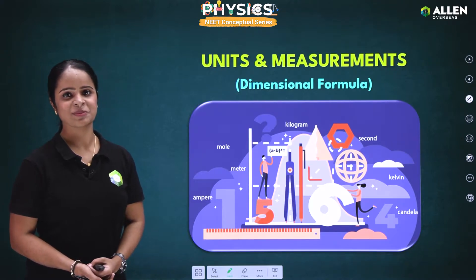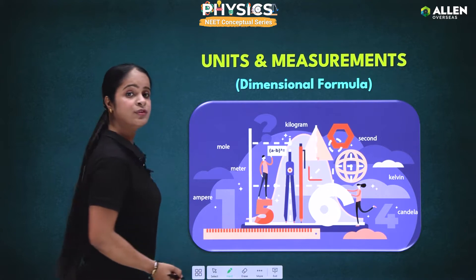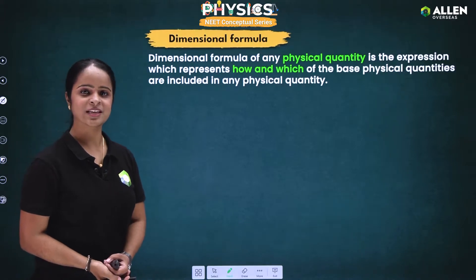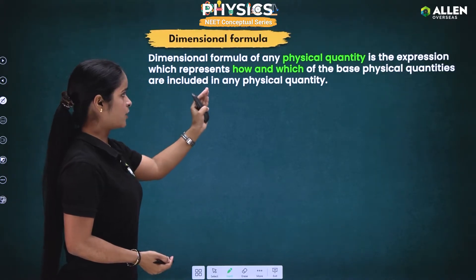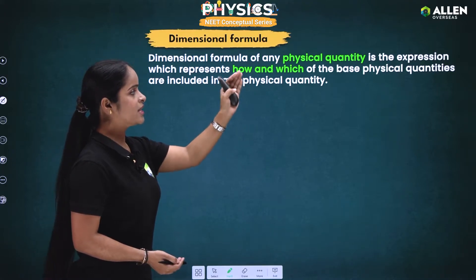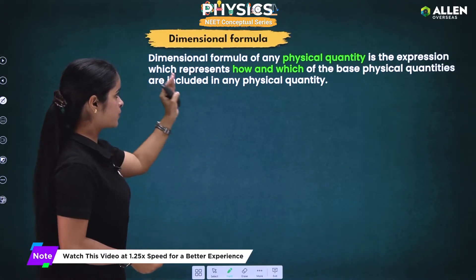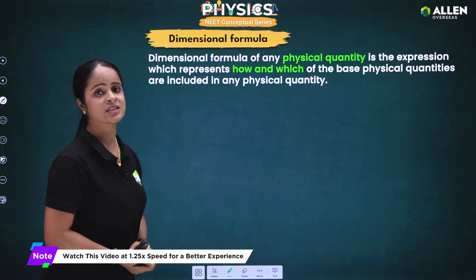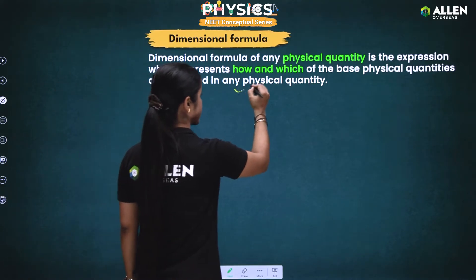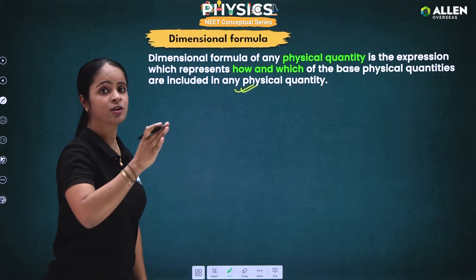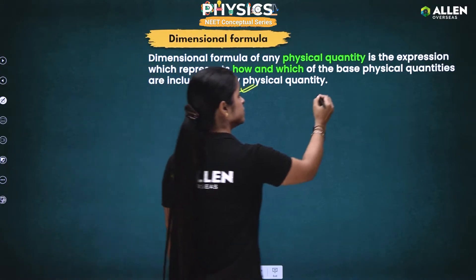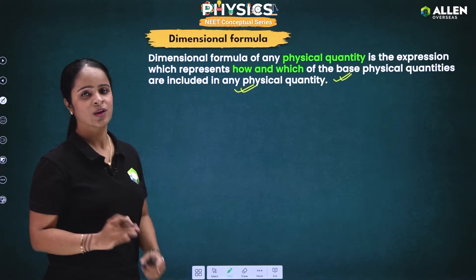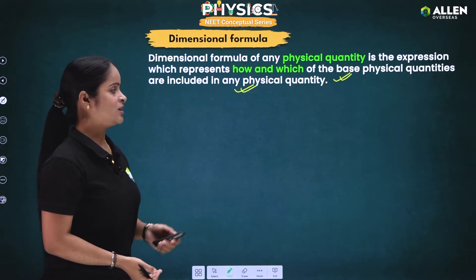The next question that would be coming in your mind: what is the basic definition of dimensional formula? The dimensional formula of any physical quantity is the expression which represents how and which of the base physical quantities are included in any physical quantity. That means if we want to write the dimensional formula of any given physical quantity, we should know the dimensional formula of base physical quantities which are included in it.